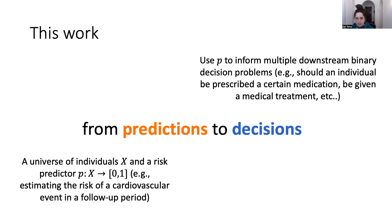By decisions, I mean that the way we end up using this predictor P is to inform multiple downstream binary decision problems. These can be varied — for example, should a specific individual be prescribed some medication, should they be subject to some medical treatment, etc. For this talk I'm going to call all of these 'treat or don't treat' decisions, since I have a medical example in mind.